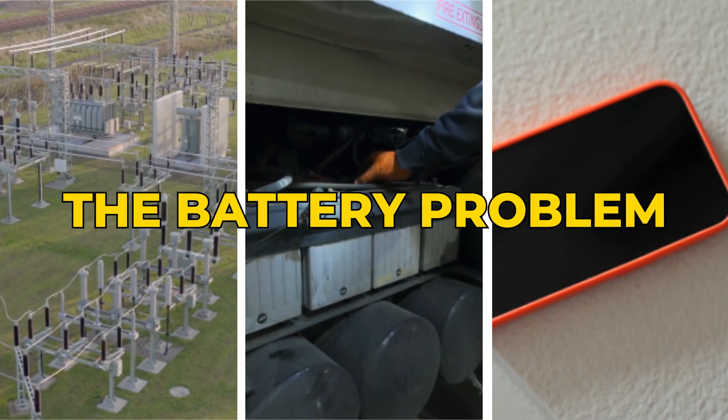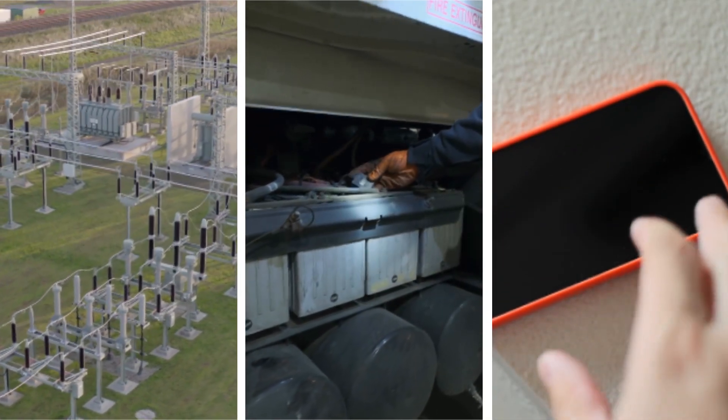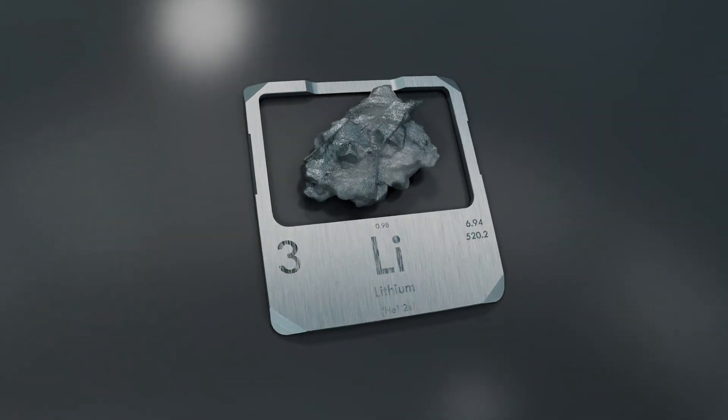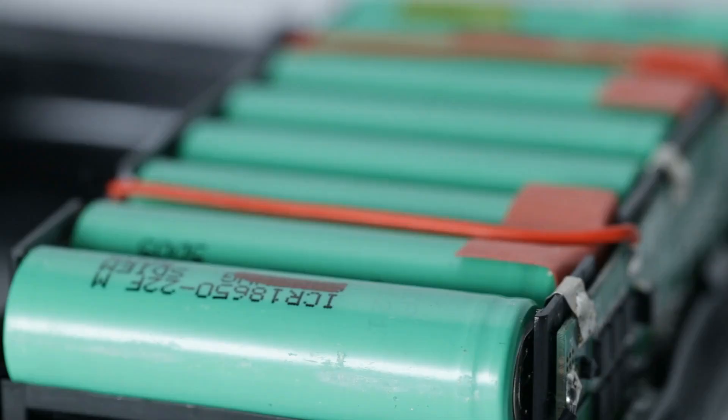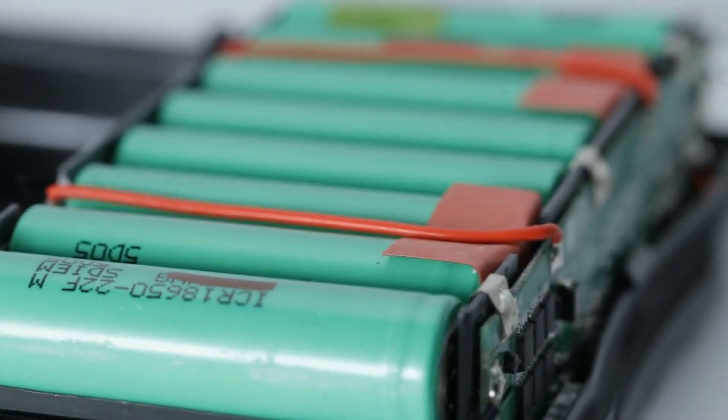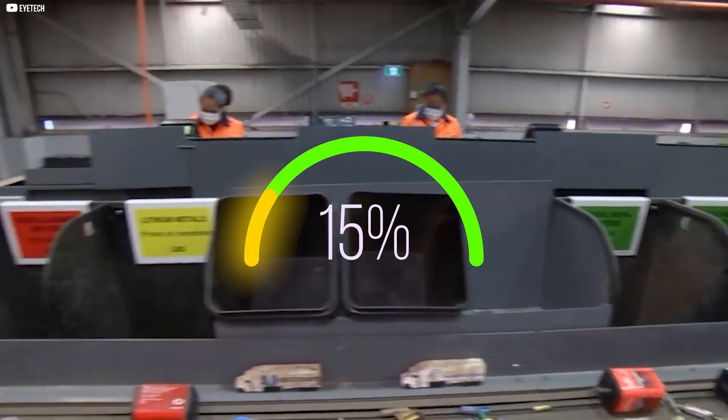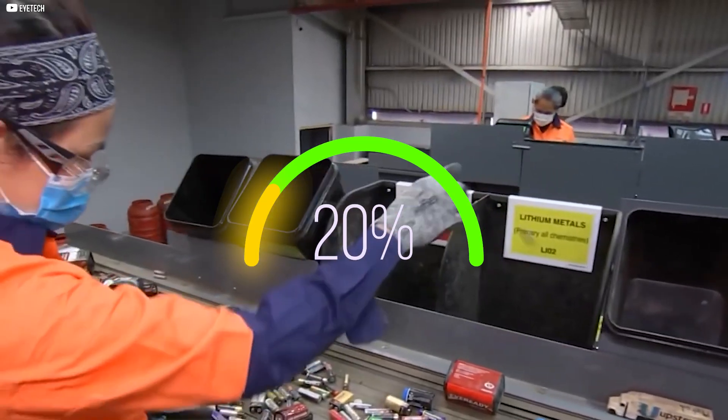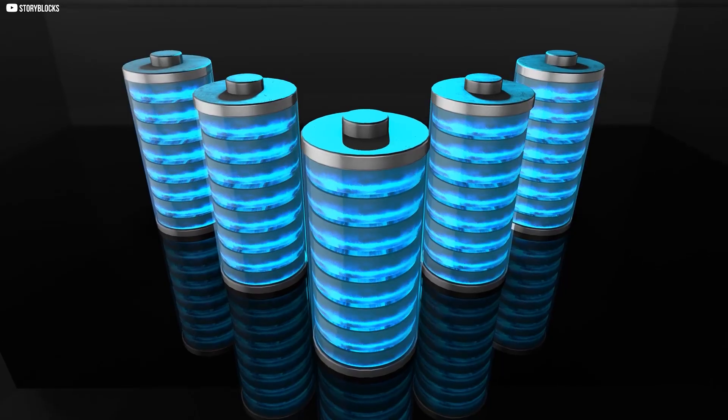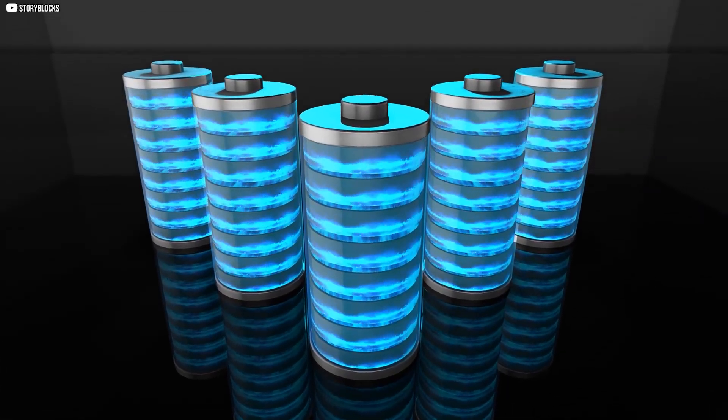The battery problem. Batteries are in everything: phones, cars, and energy farms. Most use lithium, the gold of energy. But these batteries don't last forever. When they lose 20% of their power, we throw them out, even though they still have energy left. This leftover energy is called dead lithium.